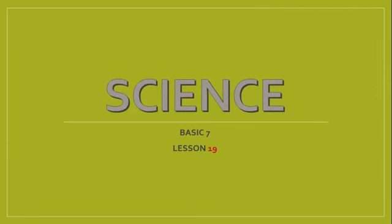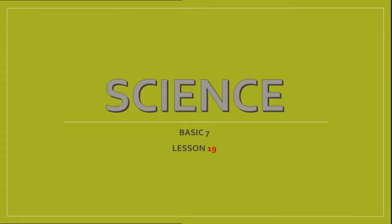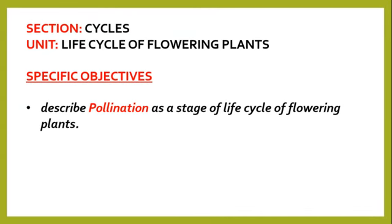Welcome to our 90th lesson in science. The section is circles and the unit is life cycle of flowering plants. The specific objective is that by the end of the lesson, we should be able to describe pollination as a stage of the life cycle of flowering plants. We began this topic with the seven main stages of life of plants, touching on flowering as the first stage. Today we would like to talk about pollination.